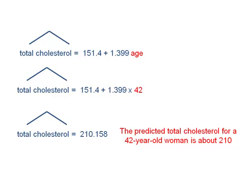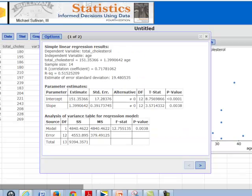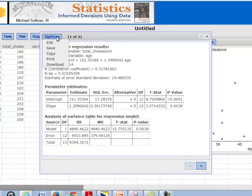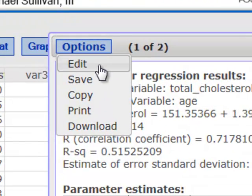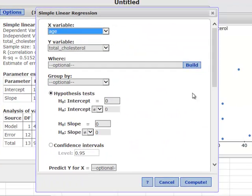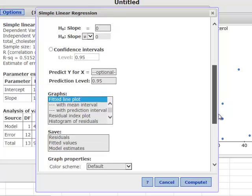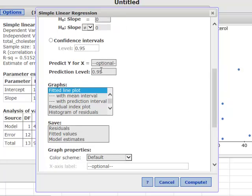You do want to be able to do something like this by hand, but of course we can also get the software to give it to us as well. To get the software to give us that predicted cholesterol for a 42-year-old woman, I'm going to go back into Regression Model under Options, select Edit. Now I'm going to need to scroll down to the option here for Predict Y for X equals. We want to predict cholesterol when age is equal to 42, so I'm going to say Predict Y for X equals 42.